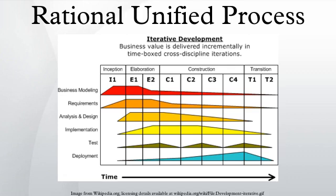The Rational Unified Process is an iterative software development process framework created by the Rational Software Corporation, a division of IBM since 2003. RUP is not a single concrete prescriptive process, but rather an adaptable process framework, intended to be tailored by the development organizations and software project teams that will select the elements of the process that are appropriate for their needs. RUP is a specific implementation of the Unified Process.